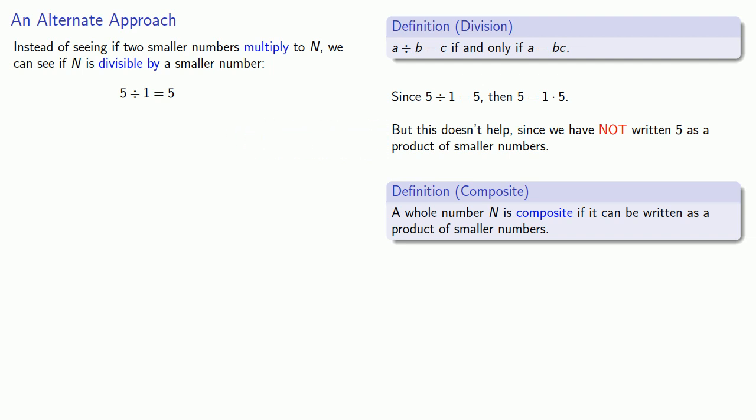But we can try other divisors. So 5 divided by 2 is... And since there's a remainder, 5 is not 2 times something. 5 divided by 3 is... And again, there's a remainder, so we go on to 5 divided by 4. And we've run out of numbers that are smaller than 5, and so we can conclude as before, since 5 cannot be written as a product of smaller numbers, it is prime.